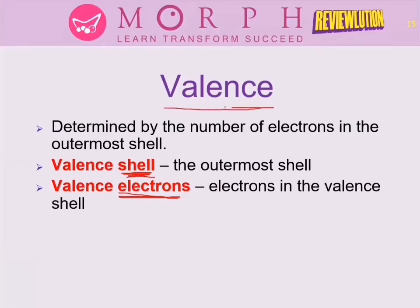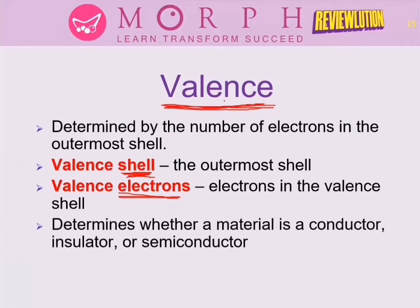Valence is very significant because by looking only at the valence, we can immediately determine whether a material is a conductor, insulator, or semiconductor. As an electronics engineer, you can identify right away — if the valence is a certain number, you know whether it's a good semiconductor, insulator, or conductor. That is the indicator used to classify what type of material an element is.